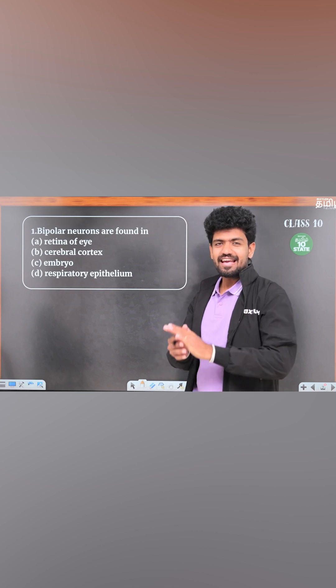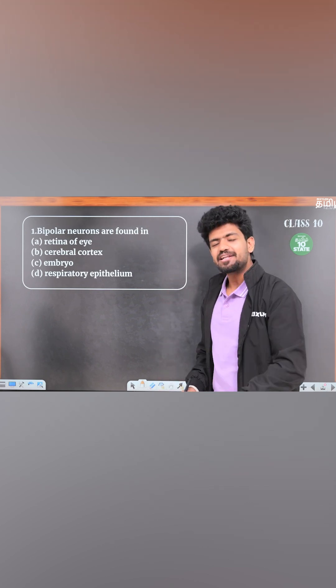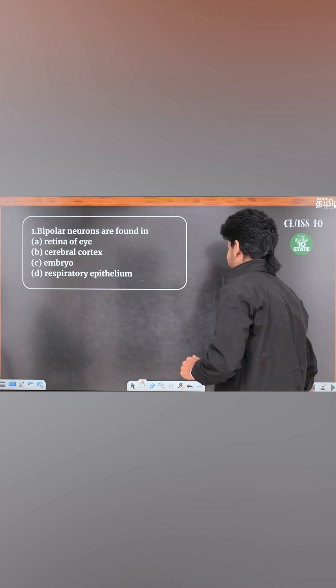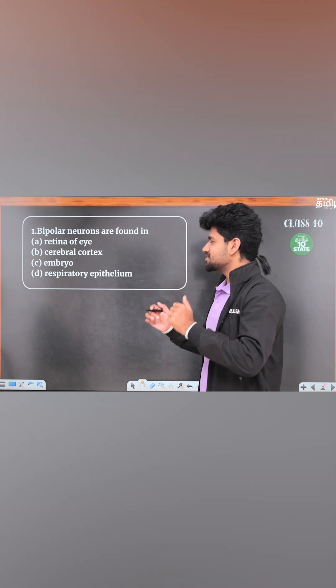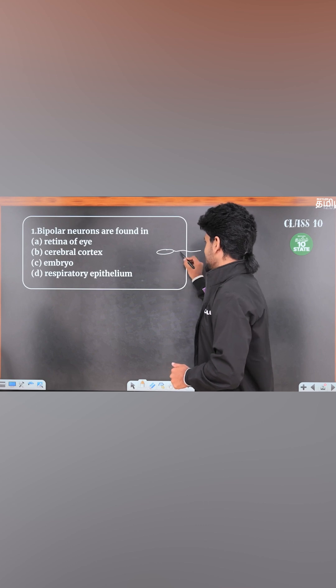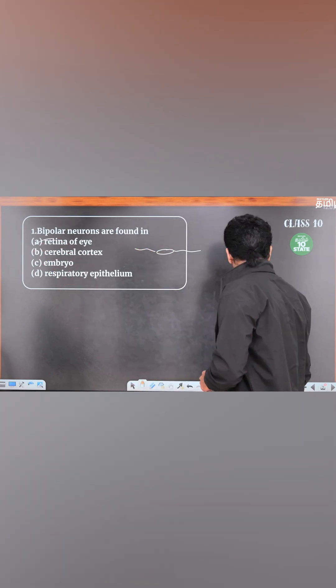Hello my dear friends, if you are interested in this one mark question, let's see. First question: Bipolar Neurons are found in... So it is always Retina of Eye.